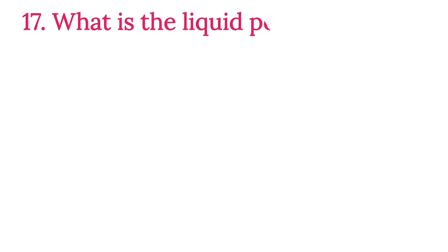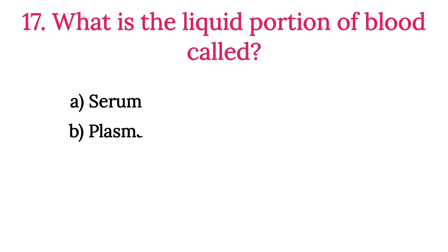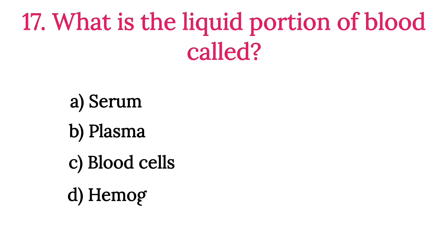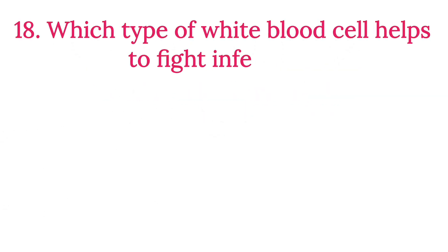MCQ Number 17: What is the liquid portion of blood called? Option A: Serum. Option B: Plasma. Option C: Blood cells. Option D: Hemoglobin. The correct option is Option B, Plasma.